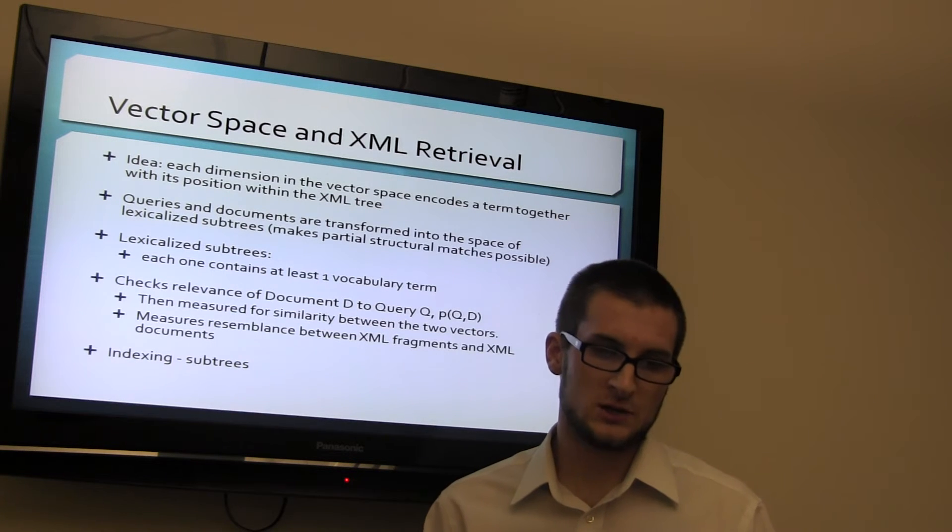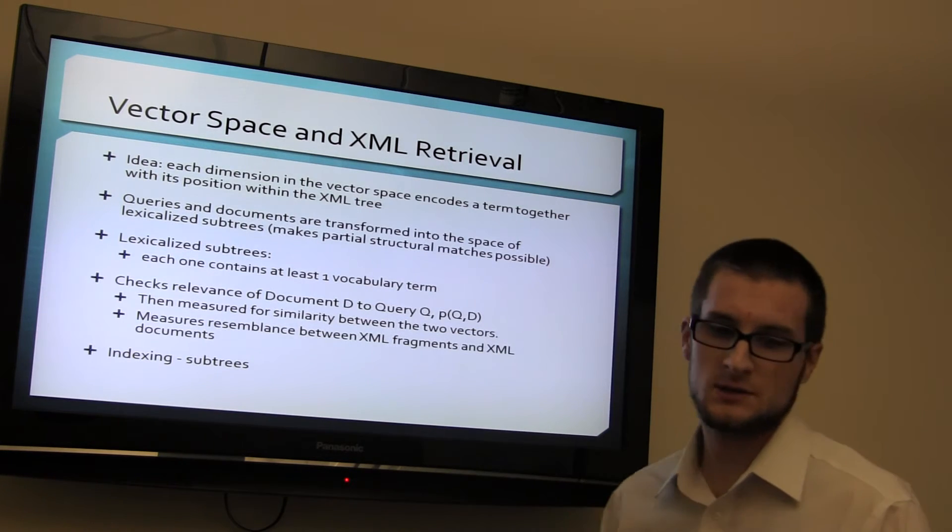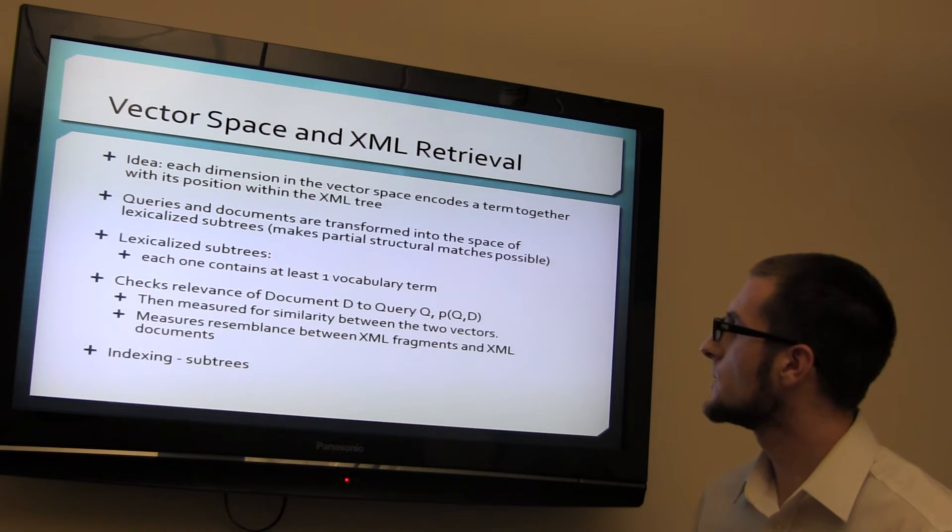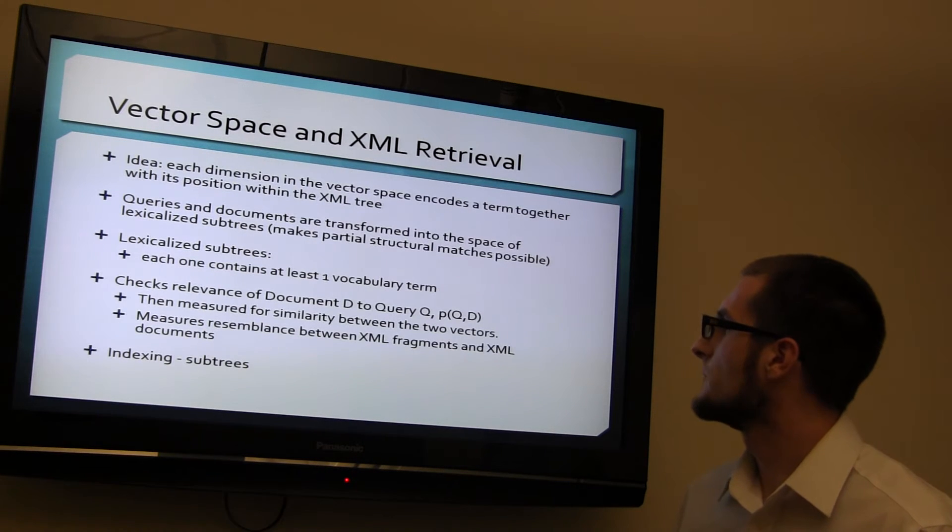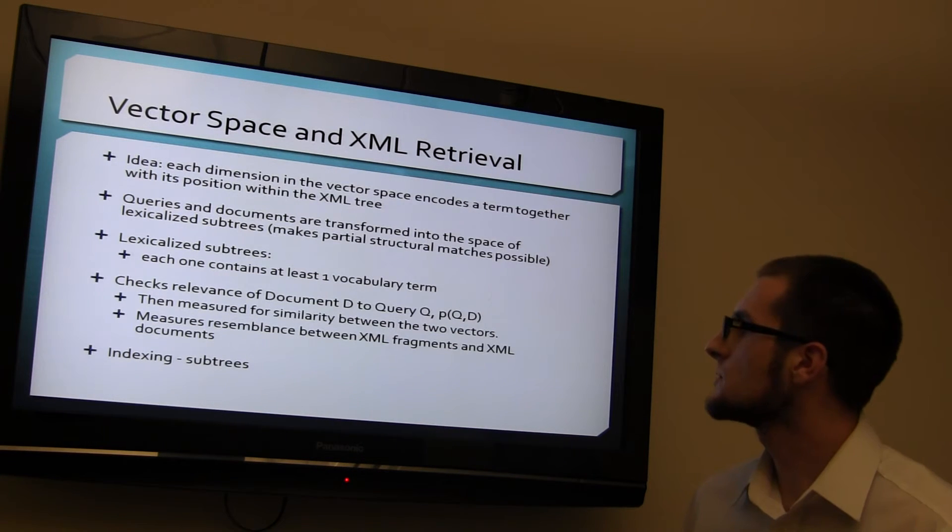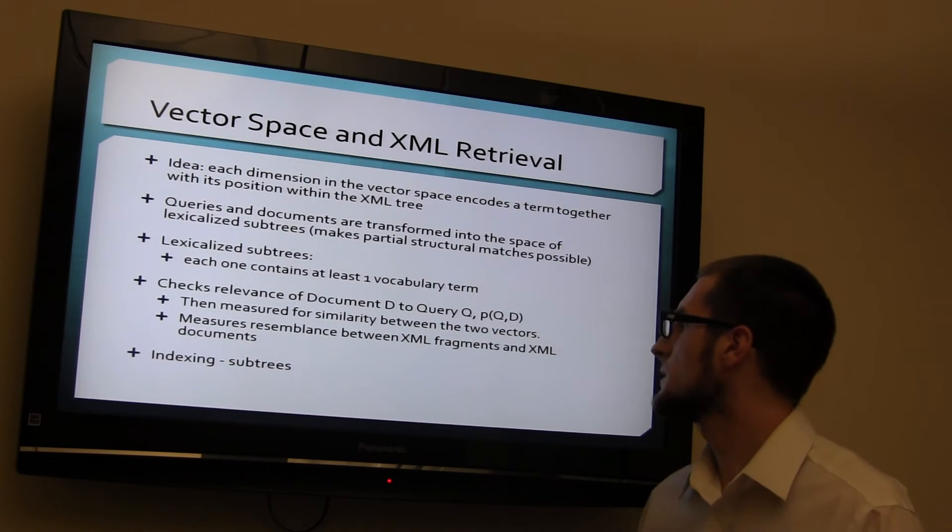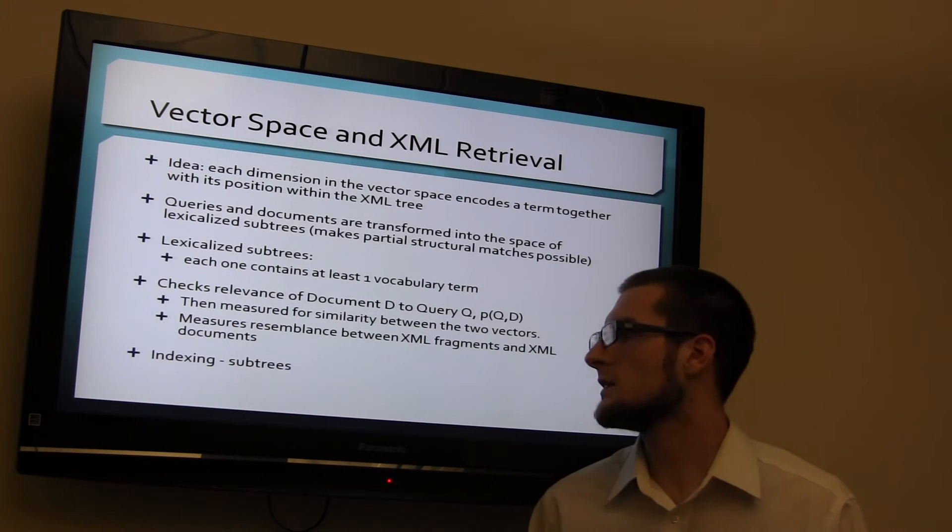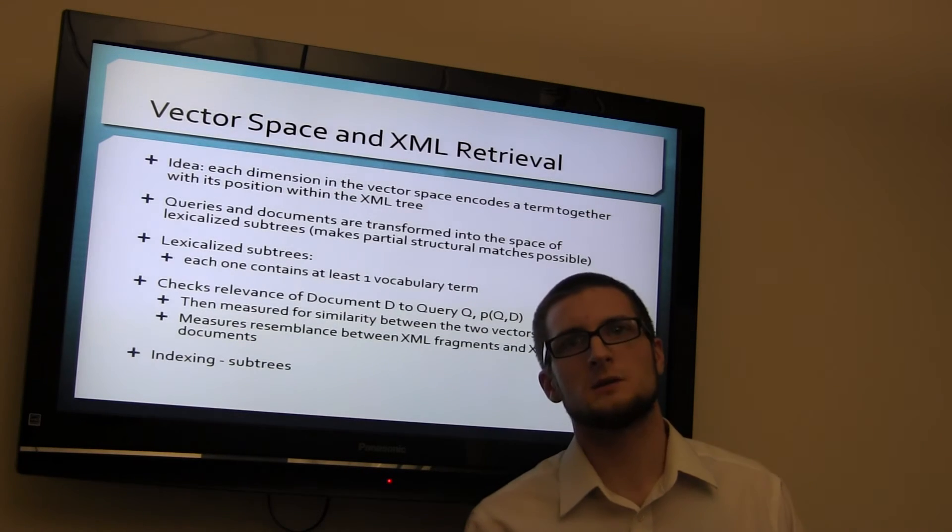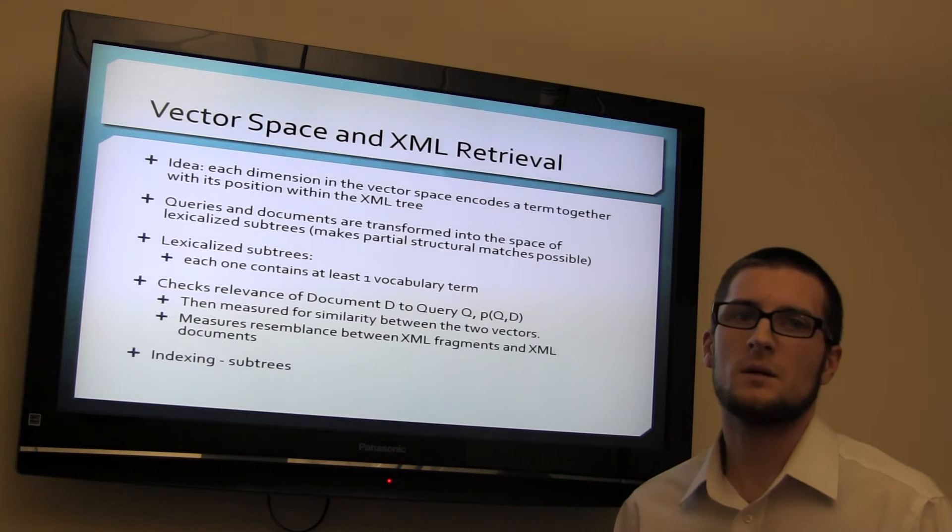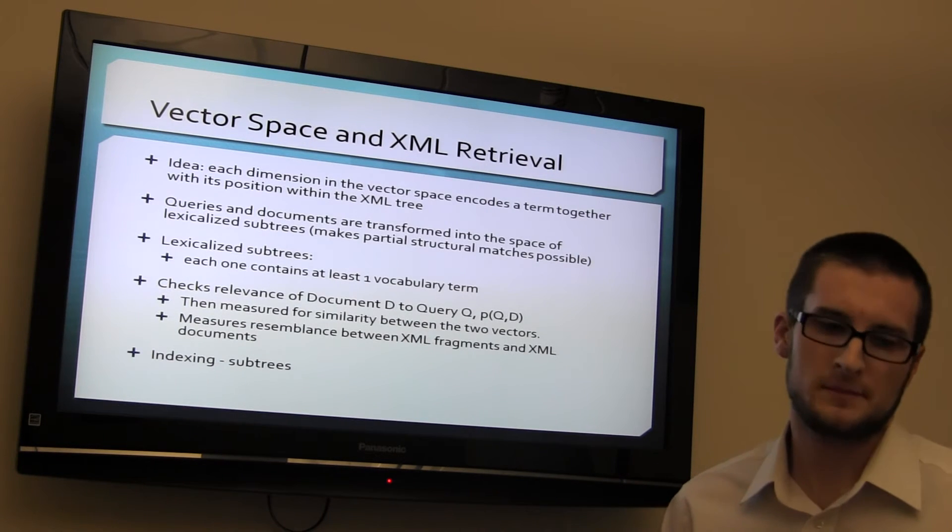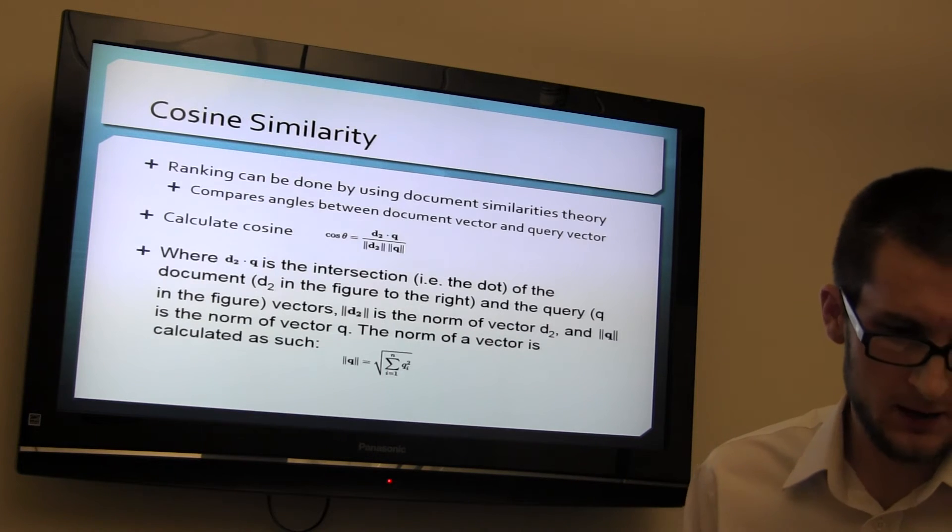It checks for relevance in documents, D, which is the equation before, and Q, the query. Then they're measured for similarity between the two vectors, and measured resemblance between XML fragments and XML documents. And then you've got to make sure to index all. Because indexing is the only way that they're going to be able to be spotted and found later on, like metadata.